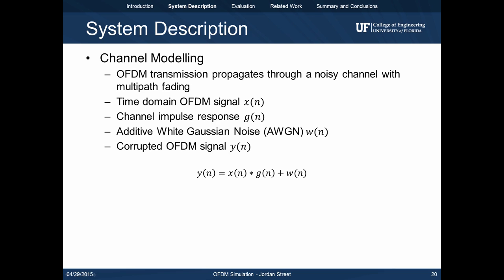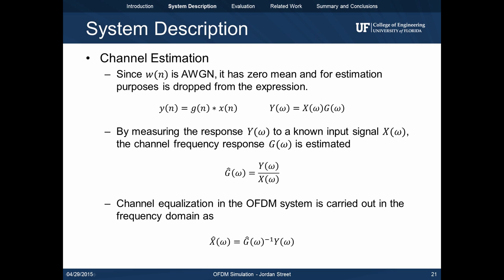In order to simulate more realistic conditions, we use a channel model which includes additive white Gaussian noise and multipath fading. X is the OFDM signal, G is the channel impulse response, W is noise, and Y is the corrupted OFDM signal. To combat the effects of multipath fading, we estimate the channel by first dropping the noise term since it's zero mean, and moving the expression to the frequency domain. By propagating a known signal X(ω), we can use the output Y(ω) to estimate G(ω). With an estimate of the channel, we can then estimate the original OFDM signal as G(ω) inverse times Y(ω).